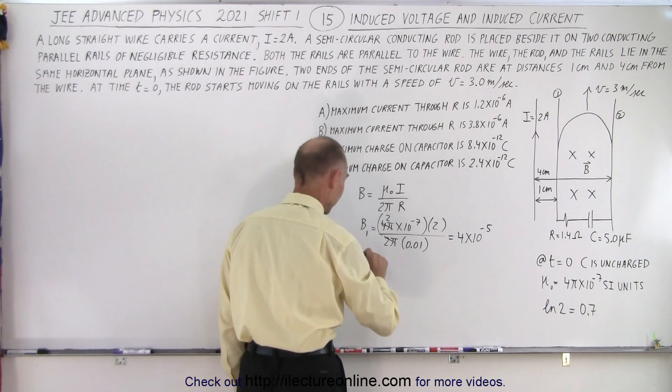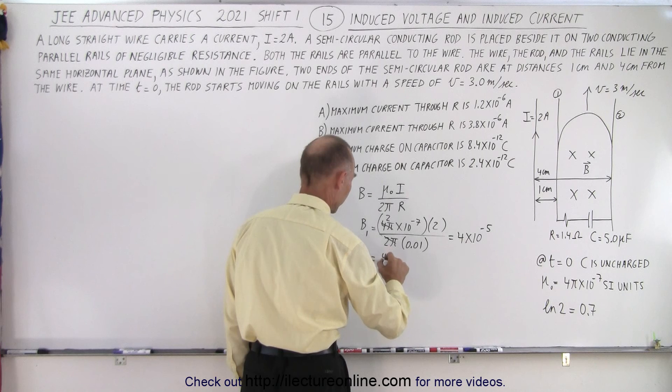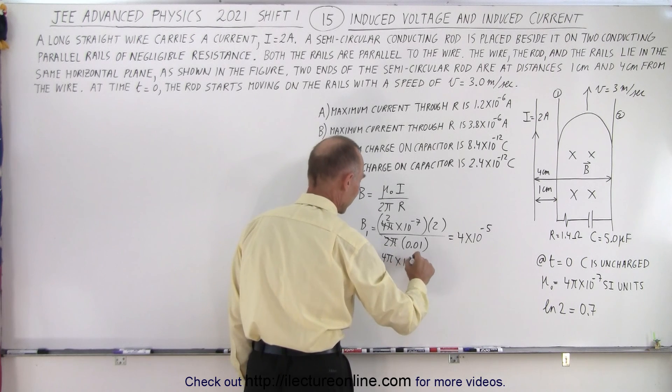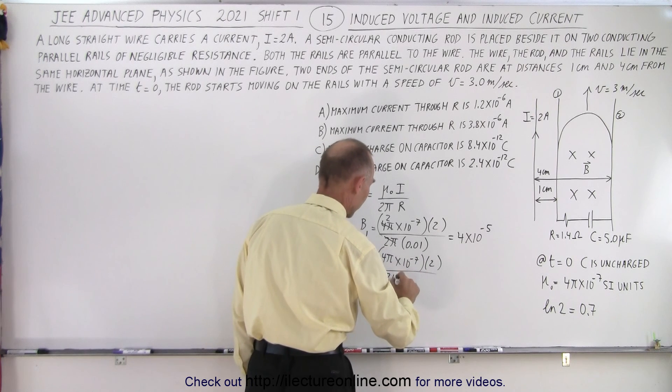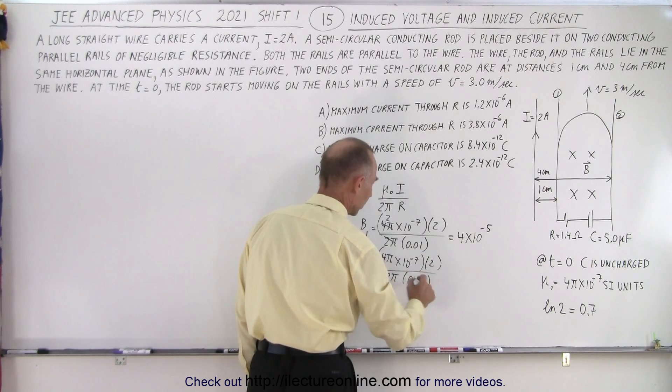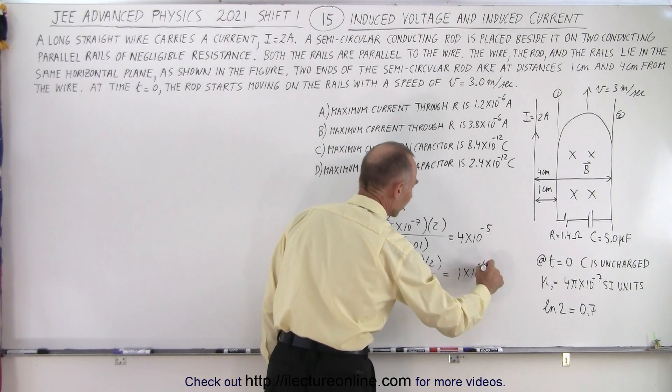And for the magnetic field at the far end that's equal to 4 pi times 10 to the minus 7. The current is 2, we still get 2 pi, and here we get 0.04, and so that means that this is equal to 1 times 10 to the minus 5.